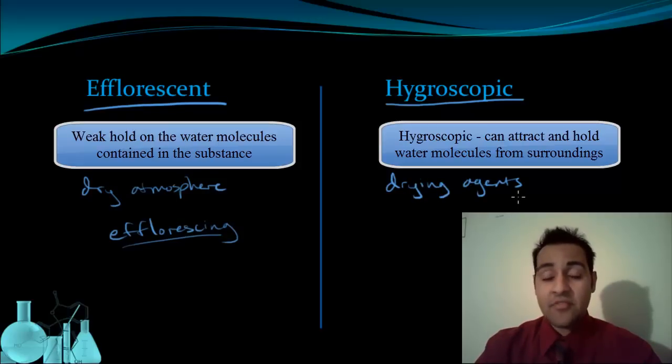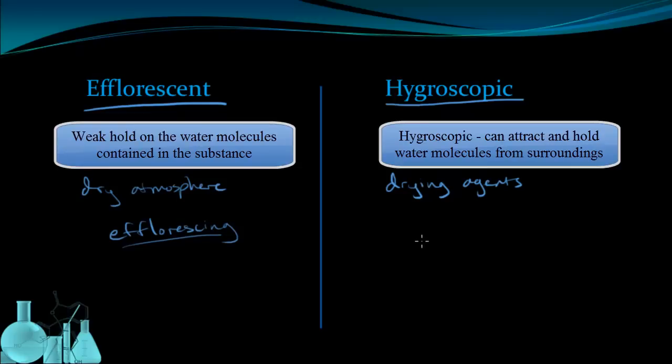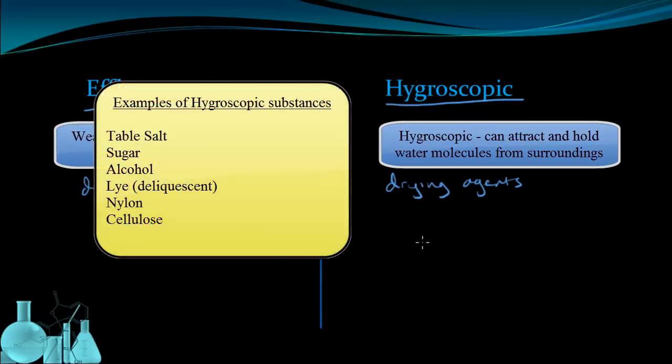This is useful because hygroscopic compounds can be used as drying agents. They can be used to dry the air for an experiment that can't have any humidity, or they can be used to dry their surrounding environment because they spontaneously absorb water. In fact, some extremely hygroscopic compounds are given a different name. They're called deliquescent.